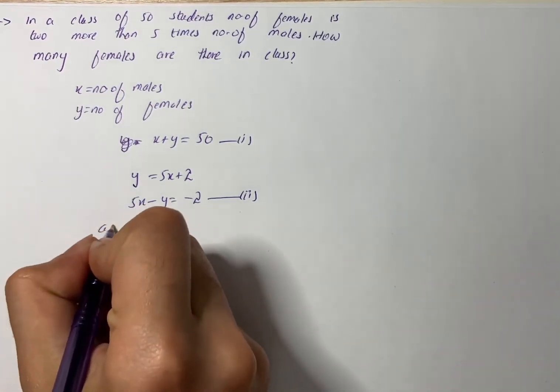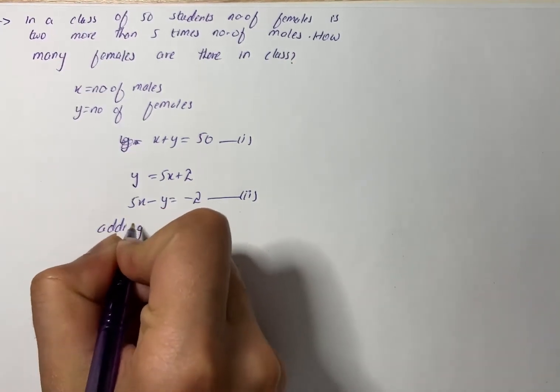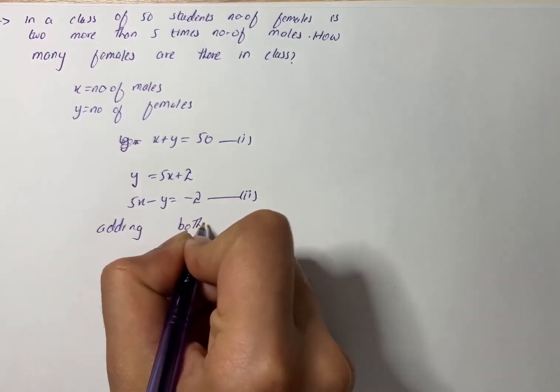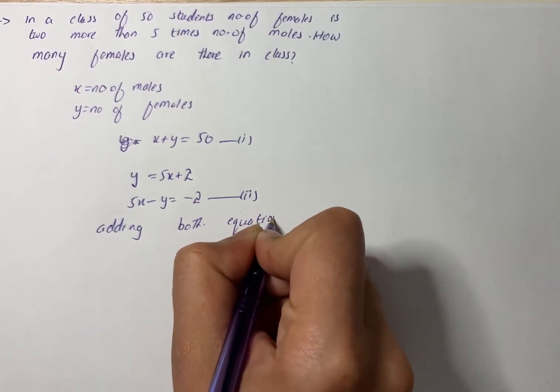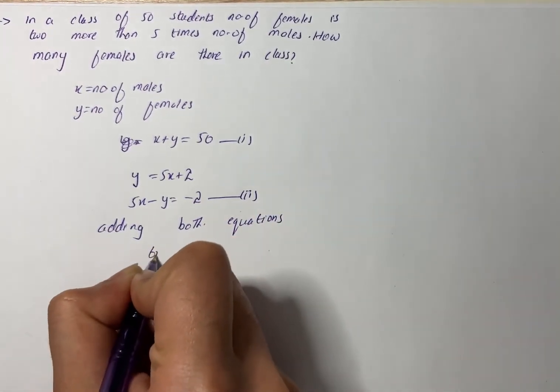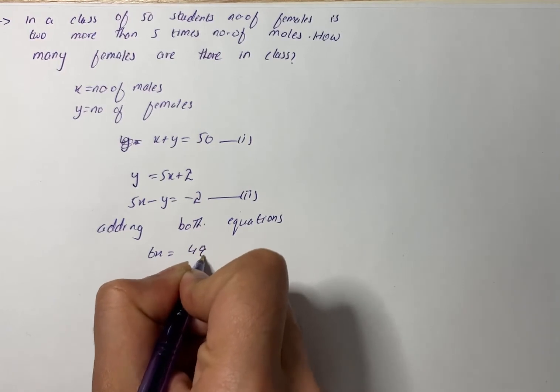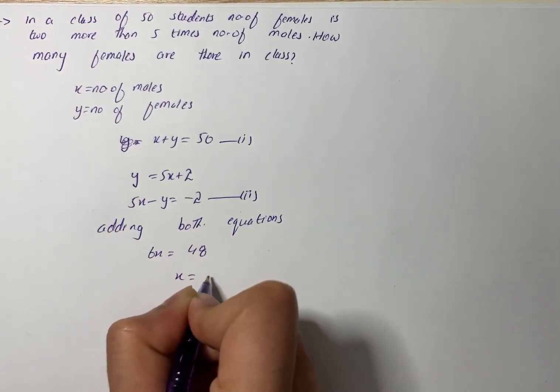Simplifying, we have 48 divided by 6, so x equals 8.